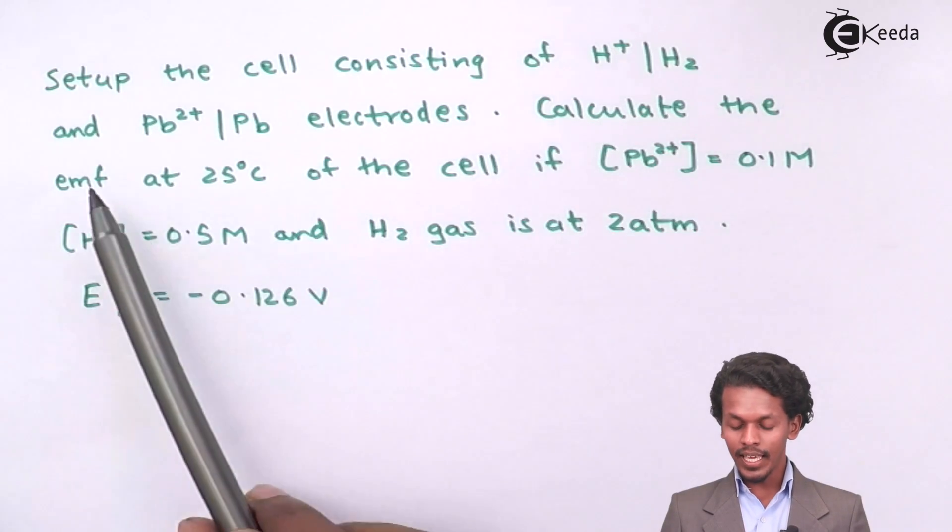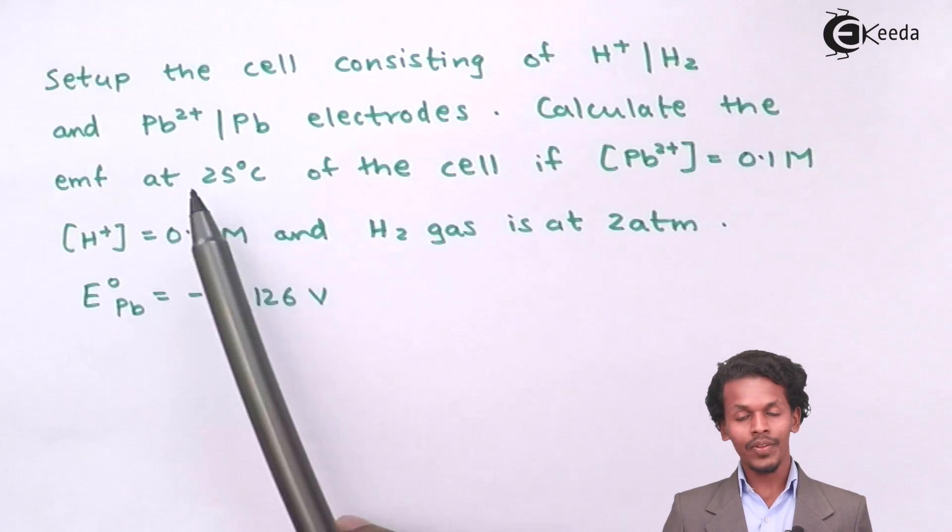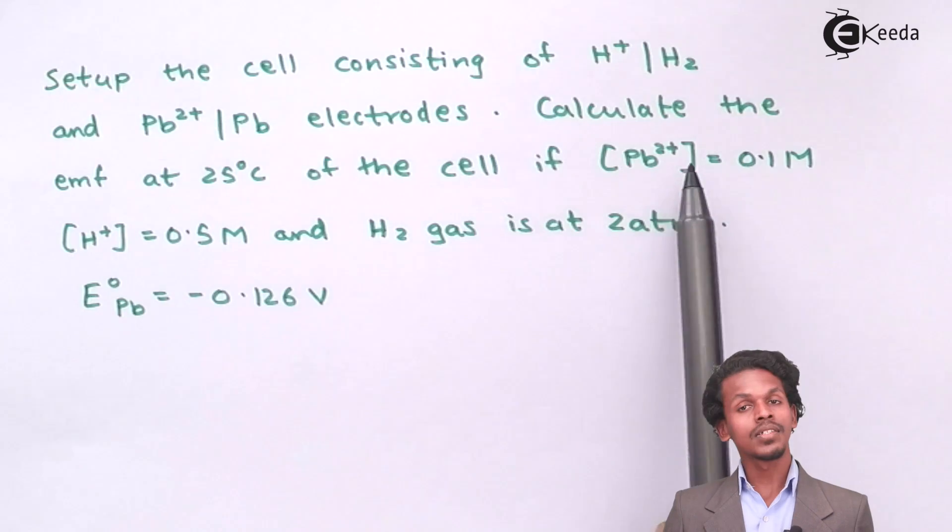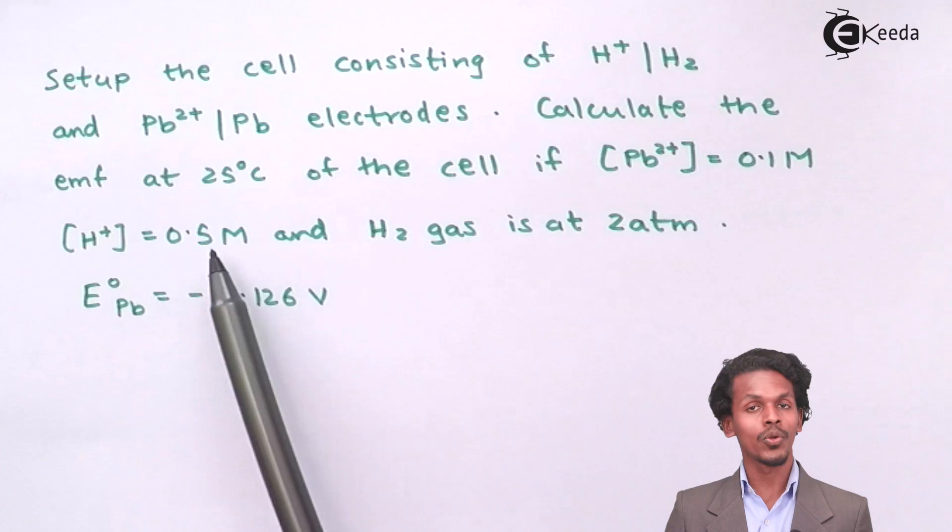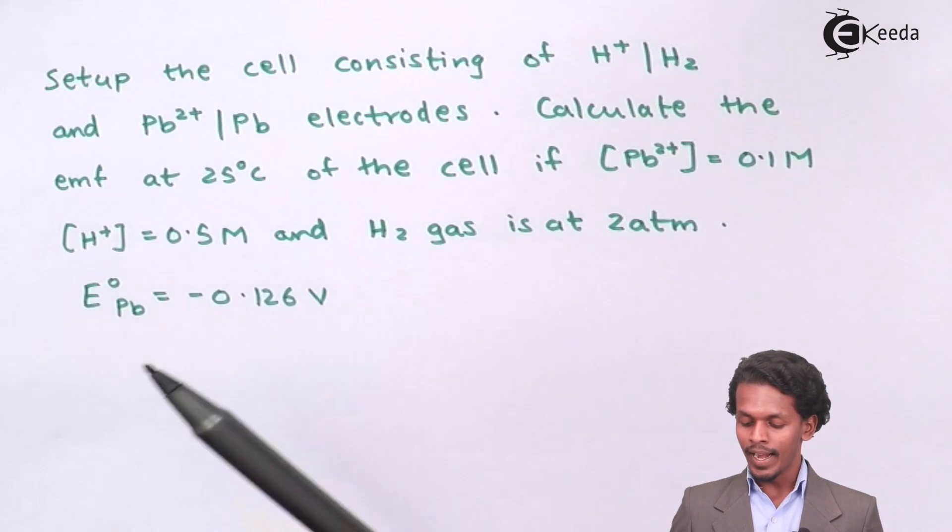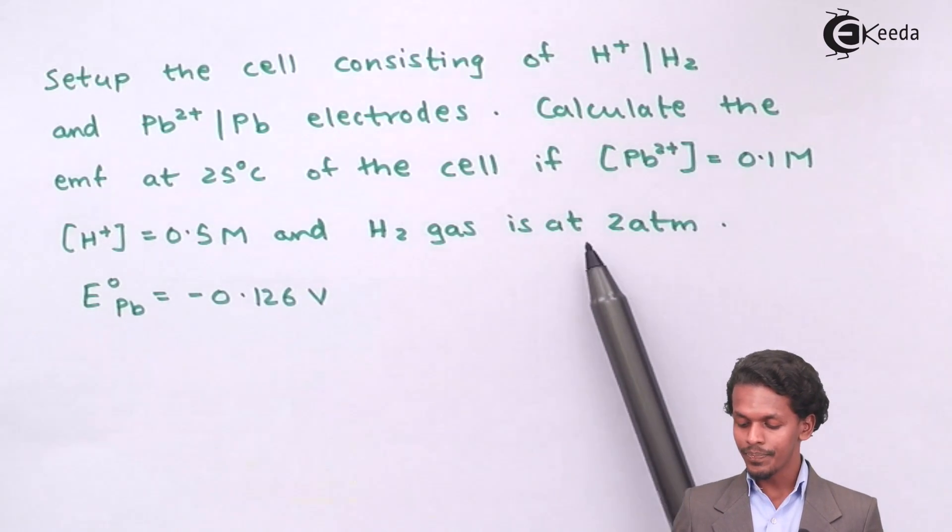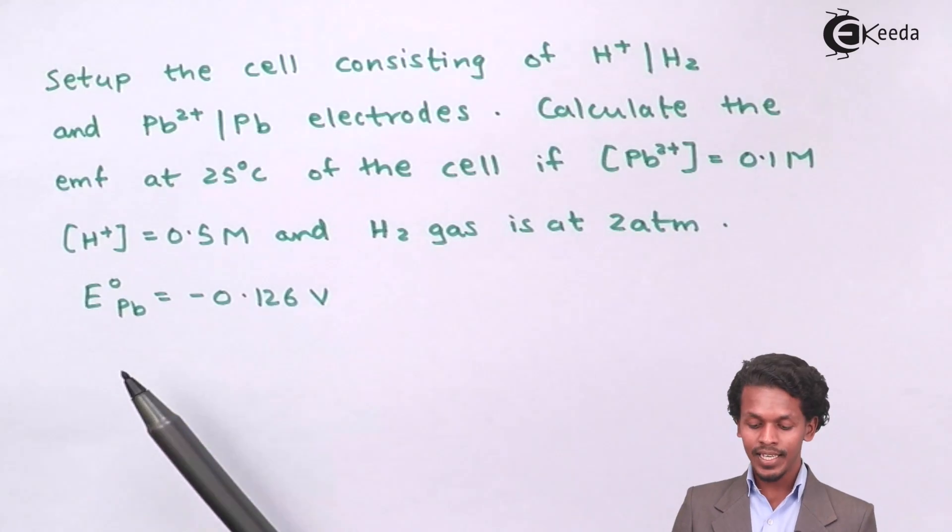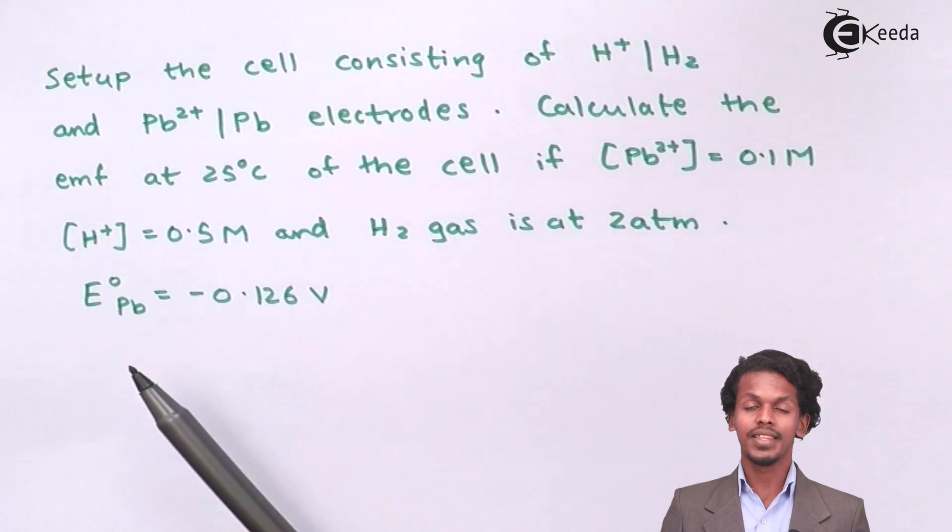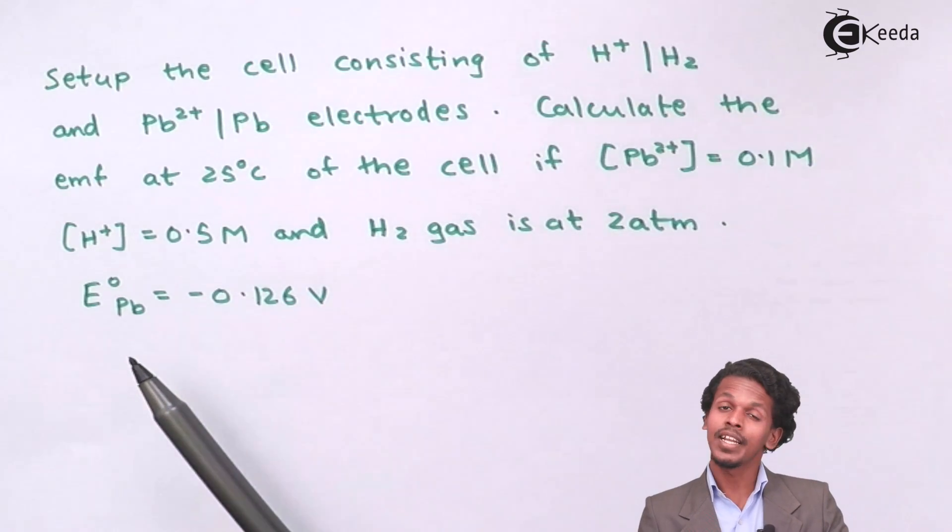Calculate the EMF of the cell at 25 degrees Celsius if the concentration of Pb2 plus was found to be 0.1 molar and the concentration of H plus was found to be 0.5 molar, and the H2 gas is at a pressure of 2 atmospheres.